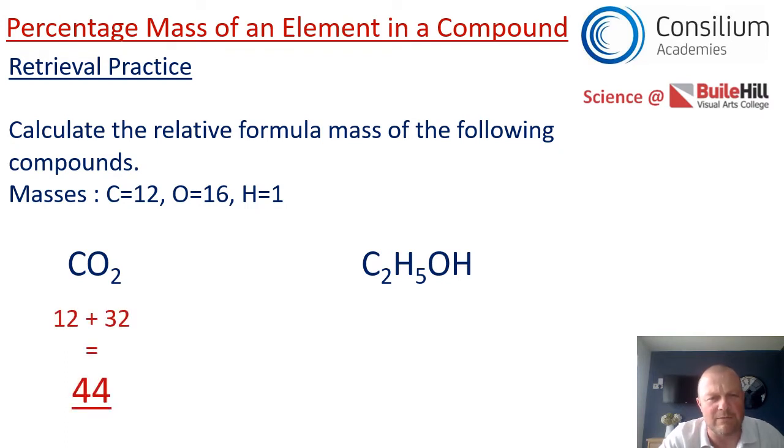Okay so the relative formula mass of CO2, C is equal to 12, O is equal to 16, well there are two of them so that's 32. So the answer is 44. And C2H5OH, if we add everything together we get the answer of 46. Well done if you can do that. If you're still a little unsure you may want to look at that first lesson again before you try to complete this lesson.